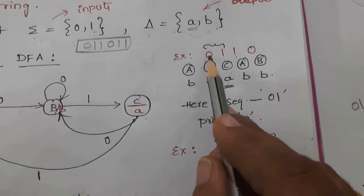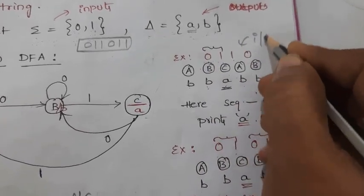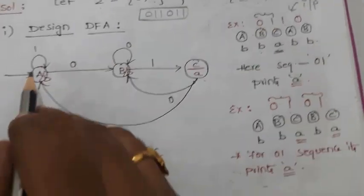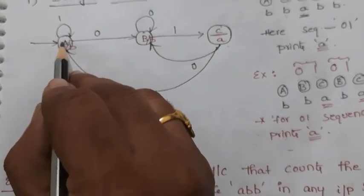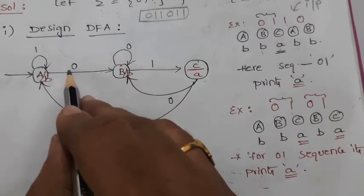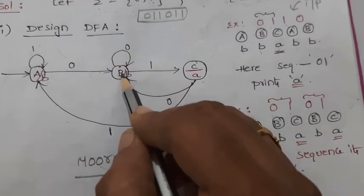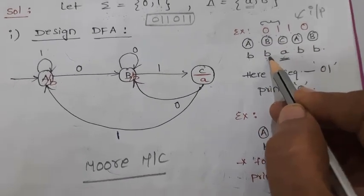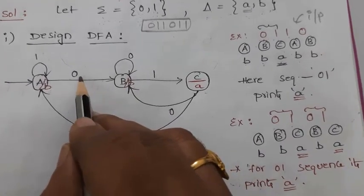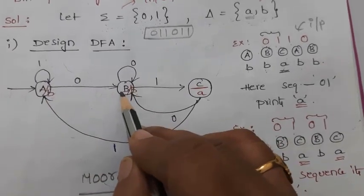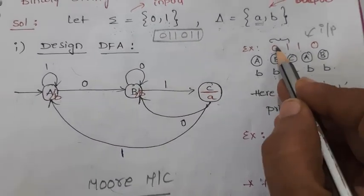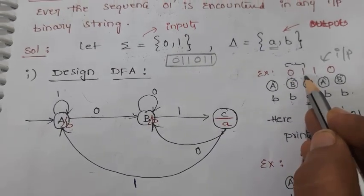Let us take one example with input binary data 0, 1, 1, 0. Initially we have 0 as the input, and we start at state A. To state A, we give 0 as input, and it goes to state B. Our objective is that the 0,1 sequence should print A.